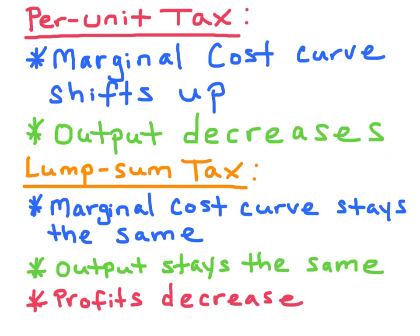Now if the government imposes a lump sum tax, that's only going to affect a firm's fixed cost and total cost. The marginal cost curve is going to stay constant. And if the marginal cost curve doesn't change, the output does not change. Output stays the same. However, this raises the average total cost for the firm, so the profits will decrease.